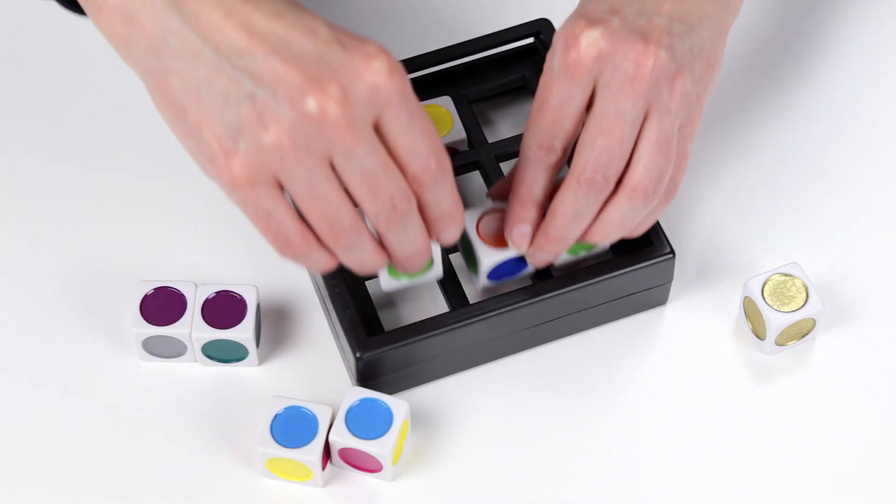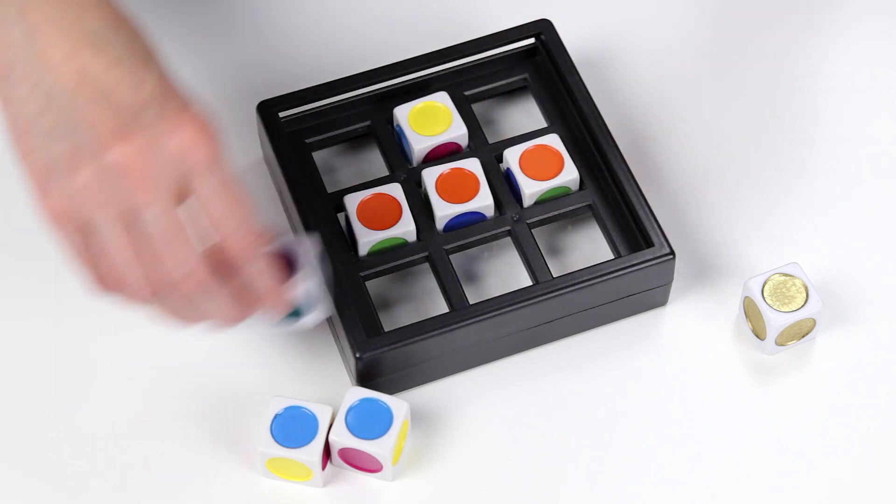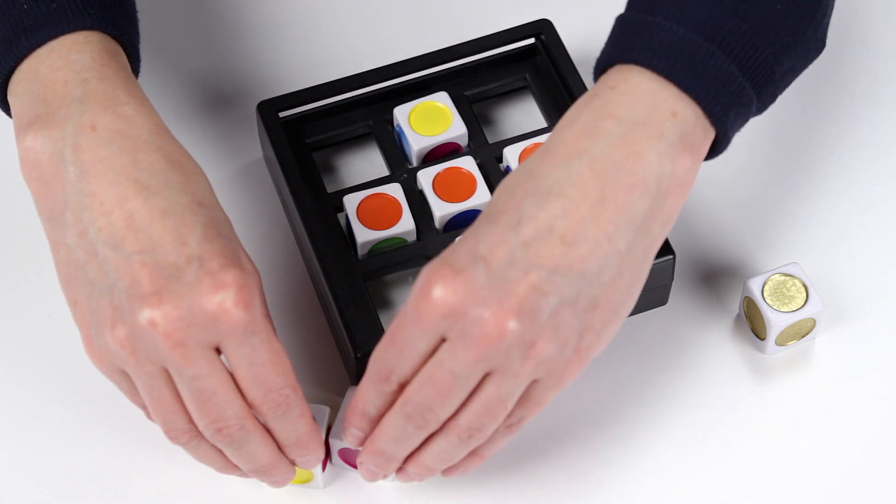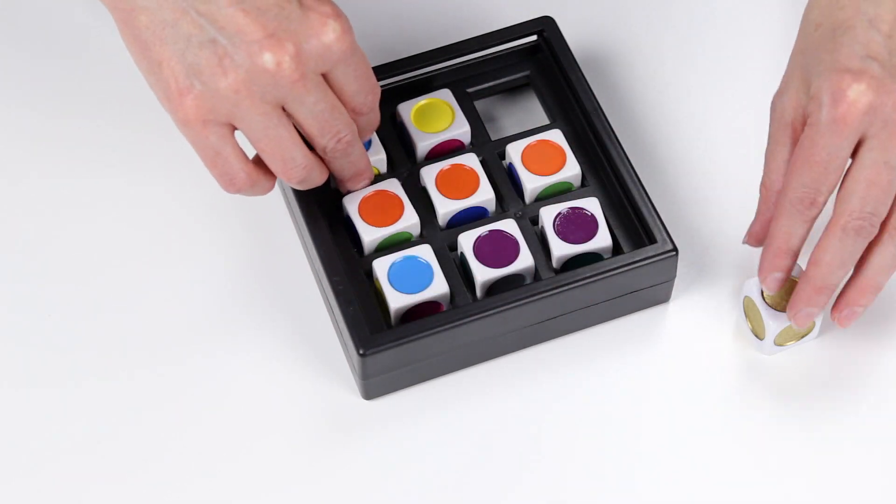Which means the orange ones have to go in the middle row and the purple ones here and the blue ones here. That means the golden cube is on the top right.